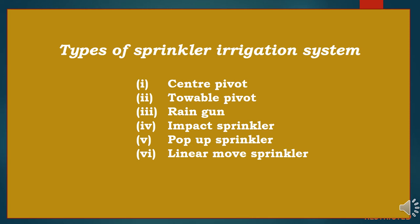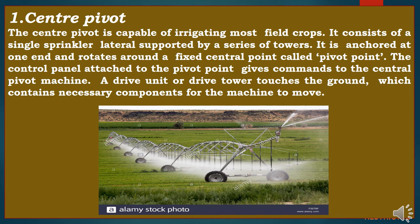The six types are: center pivot, towable pivot, rain gun, impact sprinkler, pop-up sprinkler, and linear move sprinkler irrigation. The first type is center pivot sprinkler irrigation. The center pivot is capable of irrigating most field crops. It consists of a single sprinkler lateral supported by a series of towers, anchored at one end and rotating around a fixed central point called the pivot point. The control panel attached to the pivot point gives commands to the central pivot machine, and a drive tower touches the ground, containing the necessary components for the machine to move.